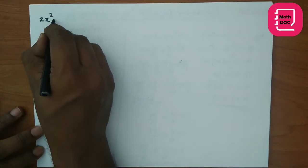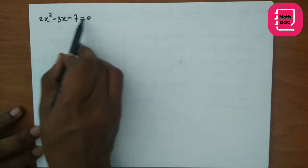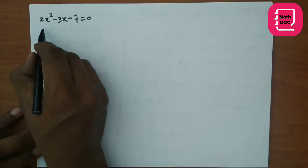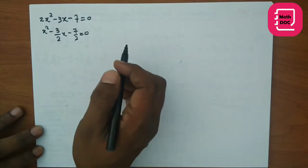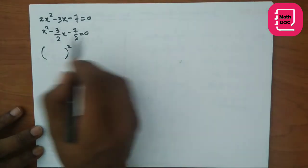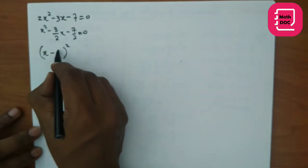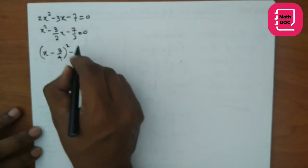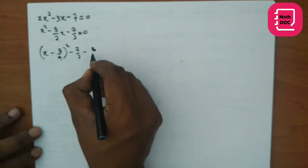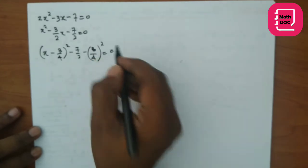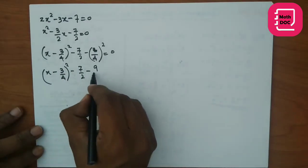Let's try another example: 2x² - 3x - 7 = 0. First divide each term by 2: x² - (3/2)x - 7/2 = 0. Now write the perfect square: write x, then minus, and divide the x coefficient 3/2 by 2 to get 3/4. Keep the constant as it is and subtract (3/4)²: (x - 3/4)² - 7/2 - 9/16.